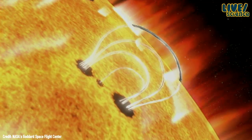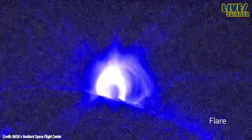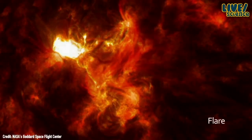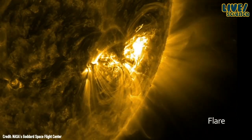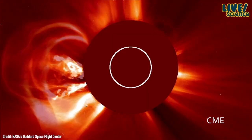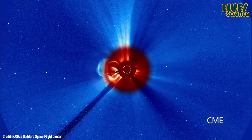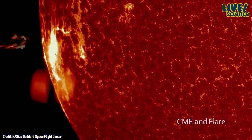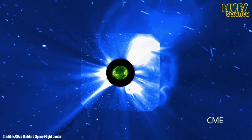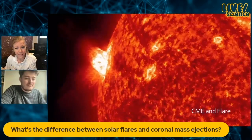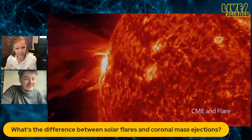Eventually those field lines will snap and release energy — either in the form of a solar flare, a bright flash of radiation, or by ejecting some of the sun's plasma. The difference is that a solar flare is just the bright flash of radiation from that field line snapping. A coronal mass ejection is some of the sun's plasma soup actually being burped out of the sun.